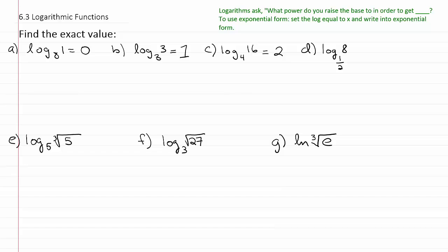So what we mean by that is simply set this guy equal to x. And then remember how to write it into exponential form. We drop the log and we switch these two positions. So we're going to end up having 1 half raised to the x power is equal to 8.